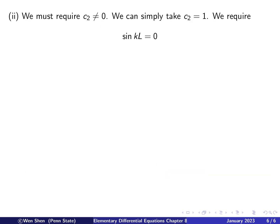So if we want non-trivial solution, then we must require c₂ to be non-zero. To simplify the notation, we can just write c₂ to be 1. Because if we find a solution with certain c₂, then by linearity, multiply it by any number is a solution again. So without loss of generality, we can just set c₂ to be 1. Then we have the following requirement, sin(kL) = 0.